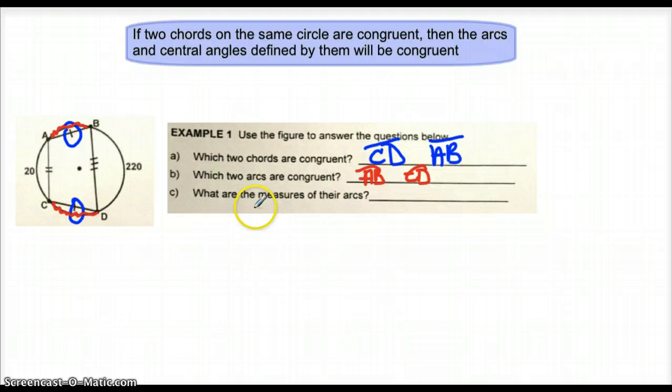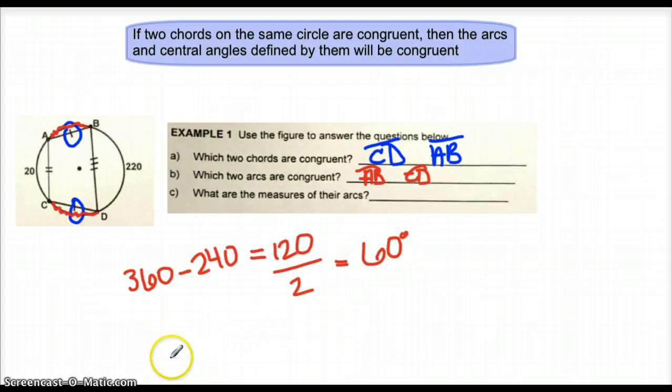What are the measures of their arcs? Well, if you take a look, you know that arc AC is 20, arc BD is 220, so we have used up 240 degrees out of the total 360 degrees. That leaves 120 degrees that needs to be divided evenly between the two congruent chords, so therefore, each of those arcs must be 60 degrees.